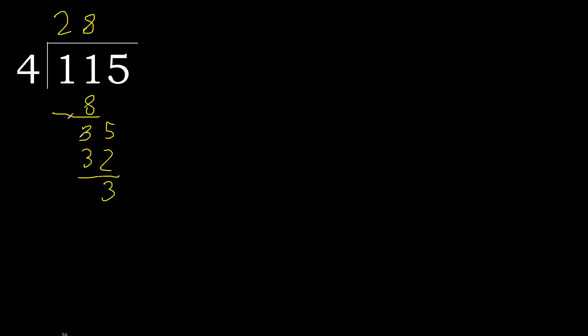Since there is no next number, complete with 0. Here, complete with a decimal point. Point — so now we have 30.